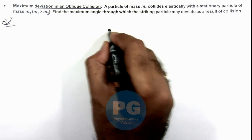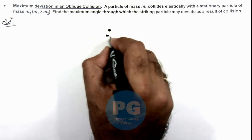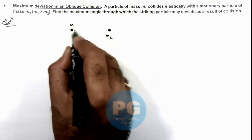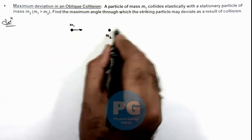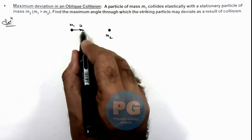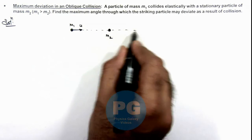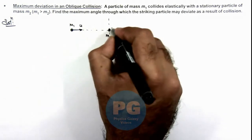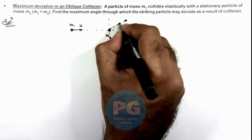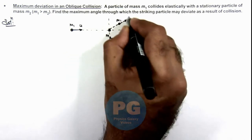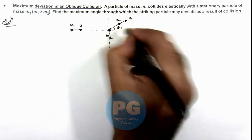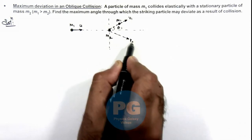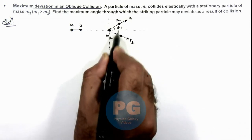The stationary particle is of mass m₂, and a particle of mass m₁ is coming and striking this mass m₂ at speed u. If this is the x-direction and this is the y-direction, after collision this particle of mass m₁ moves at a speed v₁ at an angle θ₁, and mass m₂ moves in this direction with a speed v₂ at an angle θ₂.